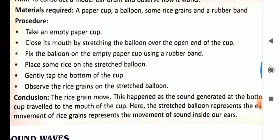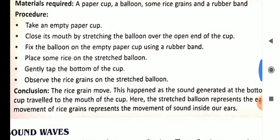The method or procedure to make the eardrum is first you have to take an empty paper cup. Close its mouth by stretching the balloon over the open end of the cup. You have to cut the balloon from between and open it and then stretch it over the paper cup. And fix the balloon on the empty paper cup using a rubber band to make it tight.